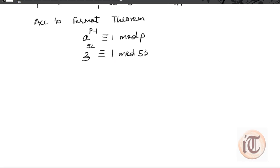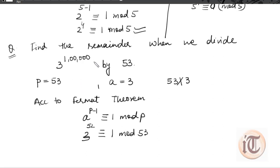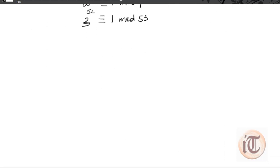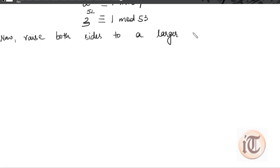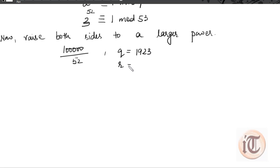But the question asks us to find the remainder when 3 to the power 1 lakh (100,000) is divided by 53. We need to raise the power to reach 1 lakh. For that, we first divide 1 lakh by 52, because we currently have 52 as our exponent. Dividing 1,00,000 by 52 gives a quotient of 1923 and a remainder of 4.